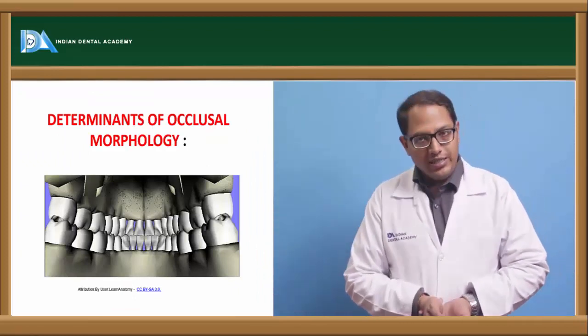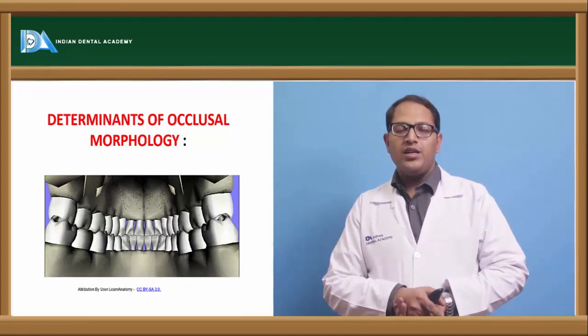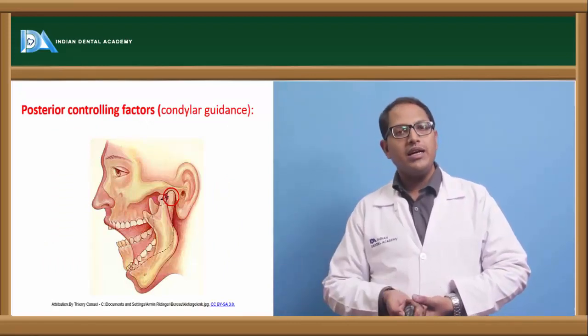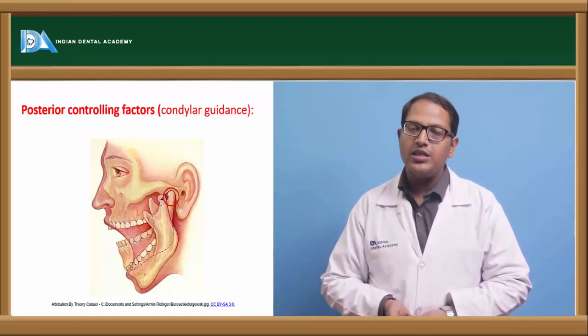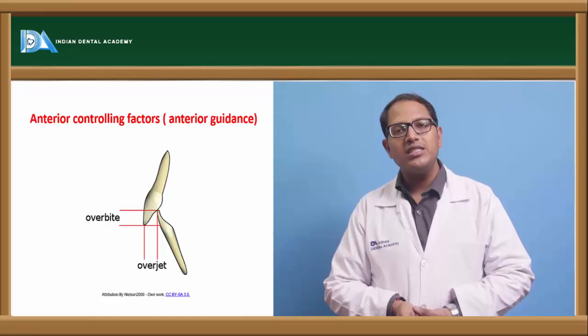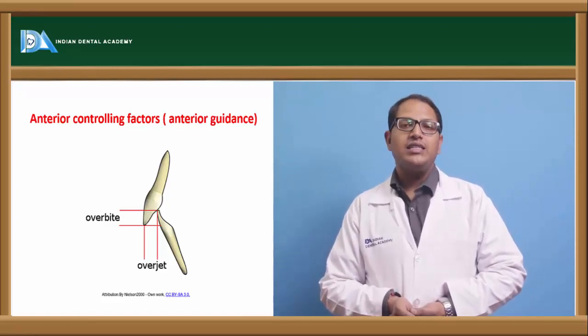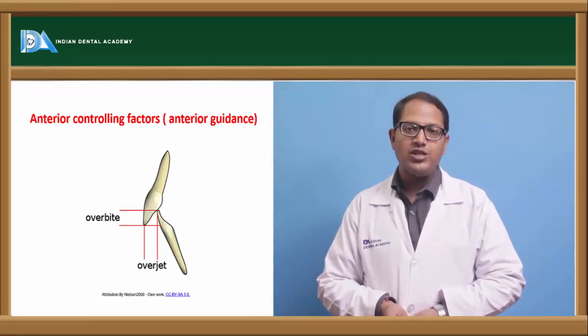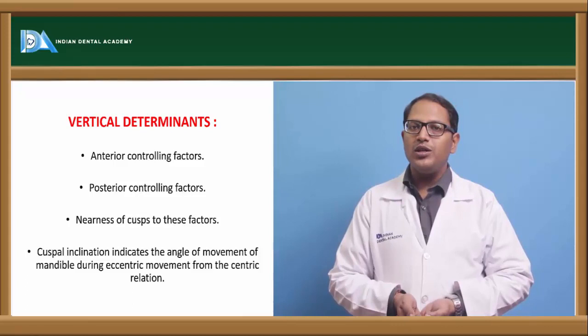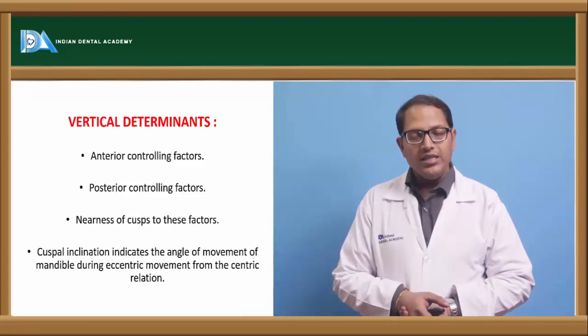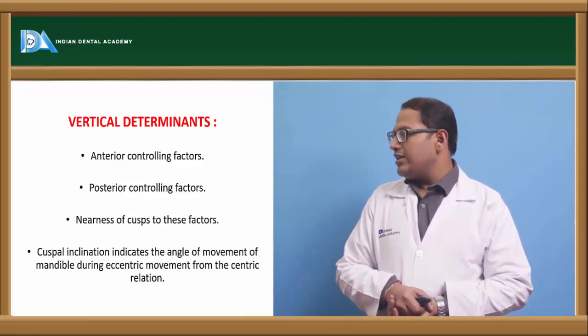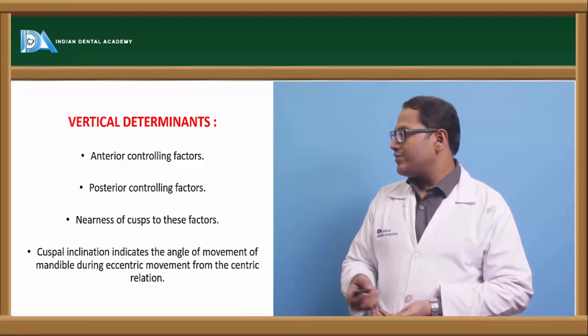Determinants of occlusion morphology. What are the things that determine how an occlusion should be? That can be determined by the posterior controlling factors, that is the condylar guidance - the path the condyle is traveling on the glenoid fossa to move for the centric and eccentric motions. The anterior controlling factor is determined by the phonetic aesthetics of the patient, that is by the overjet, overbite, and ridge relationship - the incisal guidance. Vertical determinants are the anterior and posterior controlling factors. Then nearest cusp to the related factors: the cusp angle, the plane of occlusion, and the compensating curves. The cuspal inclination indicates the angle of movement of the mandible between the eccentric movements and that of the centric relation.